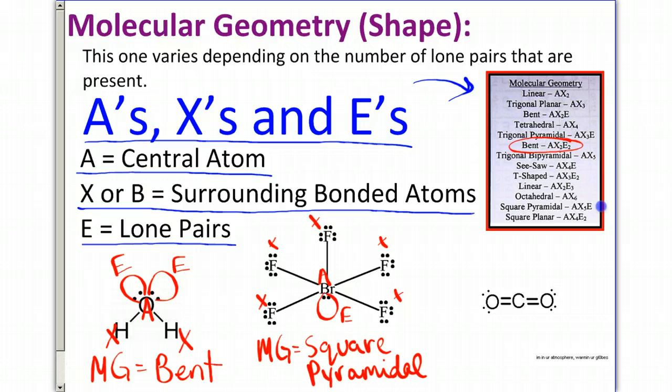My last one is CO2, and my carbon is going to be labeled A. Both of my oxygens are going to be X. And you'll notice that I have no lone pairs on the center. So this one is just A, X2. And that is going to be linear, A, X2. So it has a molecular geometry of linear.